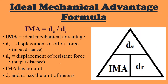Here's the formula: IMA, which stands for ideal mechanical advantage, is DE over DR, which is input over output. IMA has no unit — just like AMA, IMA does not have a unit. DE is displacement of effort force, or input distance — what you input for distance. DR is displacement of resistance force, or the output distance — what the machine does for distance. Remember, input is you and output is the machine. Both DE and DR will have the unit of meters.